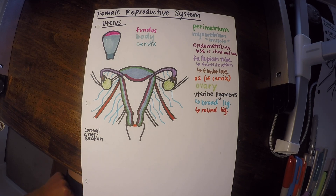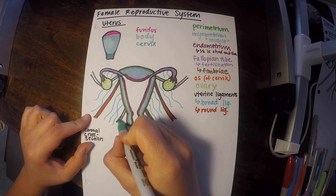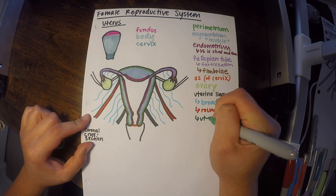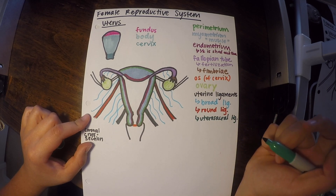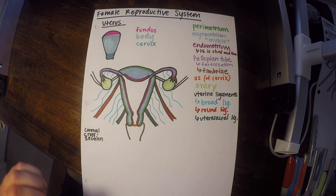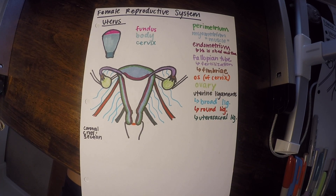One other ligament to discuss is the uterosacral ligament, which connects the uterus to the posterior area of the pelvis — specifically, it attaches the uterus to the sacrum, as the word 'sacral' implies.